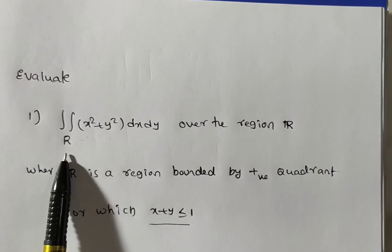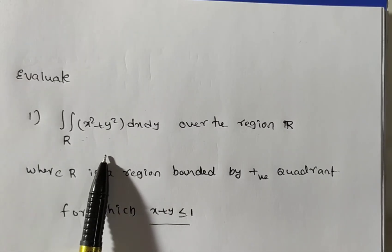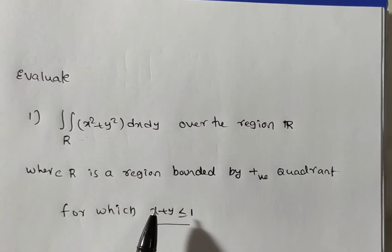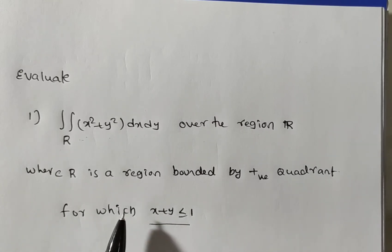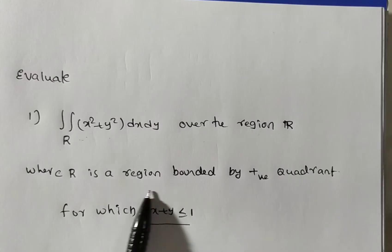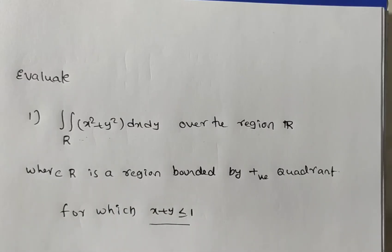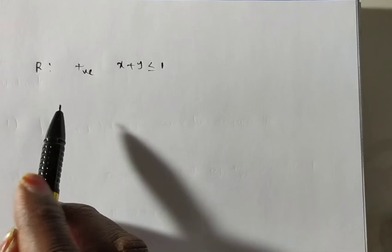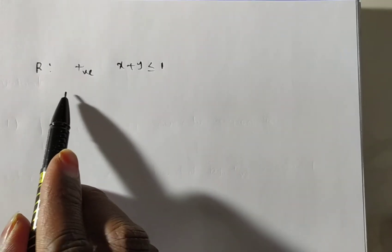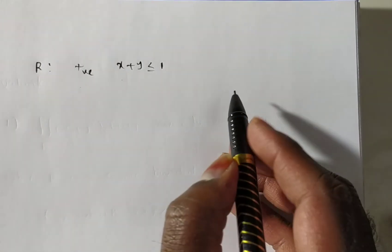So this type — what we have to do is: first we have to find out the limits for this region, and later we do the problem based on those limits. So R is bounded by the positive quadrant and x plus y less than or equal to 1.